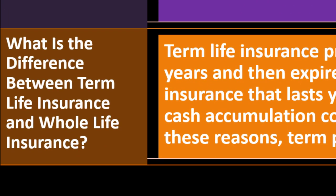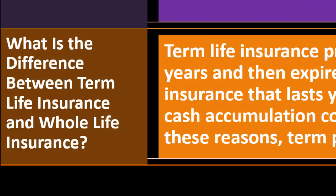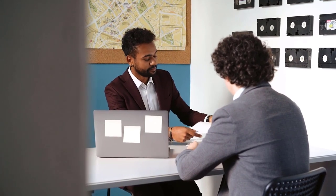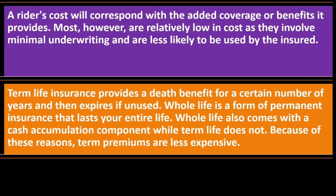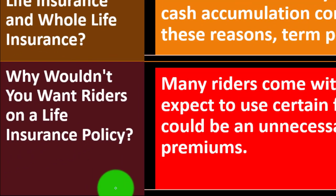What is the difference between term life insurance and whole life insurance? Remember when talking to an insurance agent that they may have an incentive — if paid by commission — to sell the more expensive permanent or whole life policy and to add as many riders as possible. That doesn't mean those things are bad, but always compare to the baseline of pure term insurance. Term life insurance provides a death benefit for a certain number of years and then expires if unused. Whole life is a form of permanent life insurance that lasts your entire life and comes with a cash accumulation component, while term life does not — which is why term premiums are less expensive.